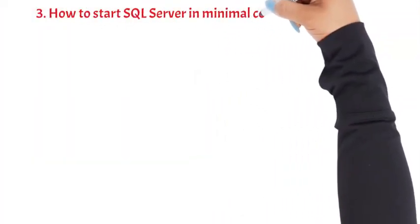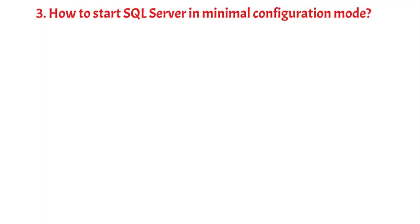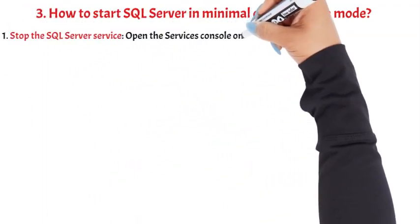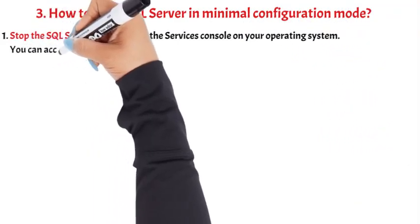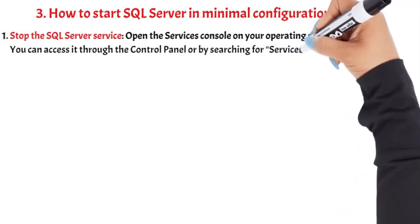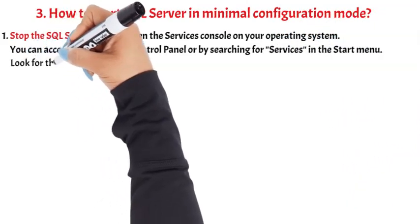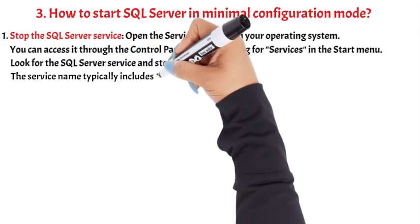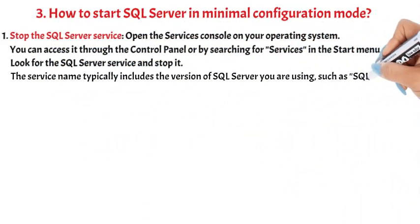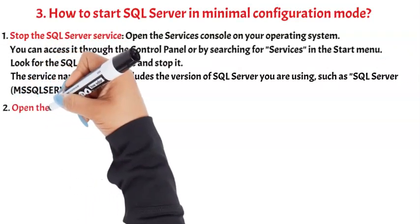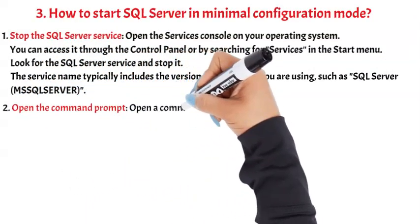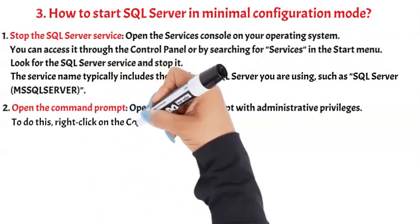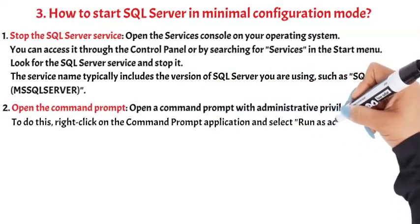Question 3: How to Start SQL Server in Minimal Configuration Mode. Step 1: Stop the SQL Server Service. Open the Services console on your operating system. You can access it through the Control Panel or by searching for Services in the Start menu. Look for the SQL Server service and stop it. The service name typically includes the version of SQL Server you are using. Step 2: Open the Command Prompt. Open a Command Prompt with administrative privileges. To do this, right-click on the Command Prompt application and select Run as Administrator.